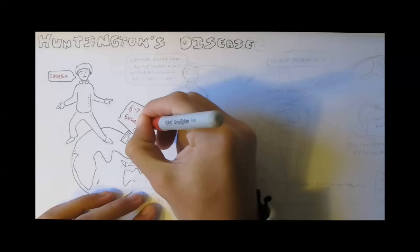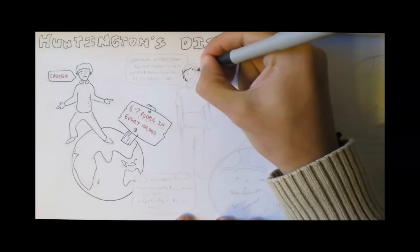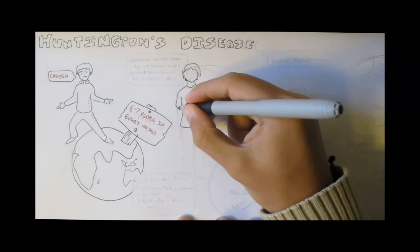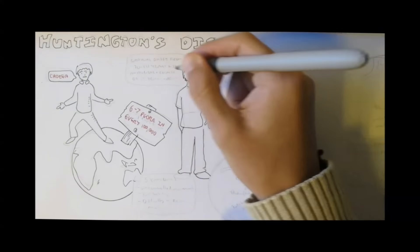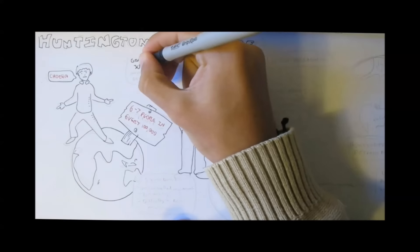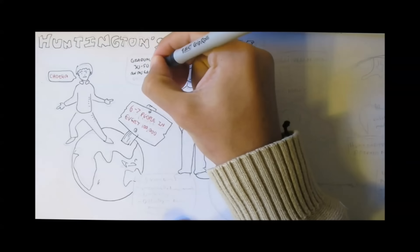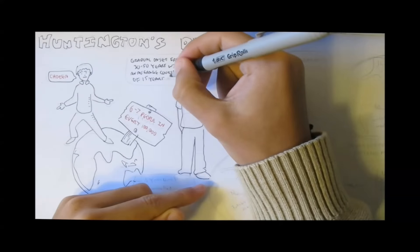Huntington's disease affects about six to seven people in every 100,000. It has a gradual onset, from 30 to 50 years of age, with an average course of the disease about 15 years. It's a terrible, terrible disease.